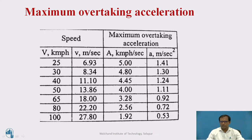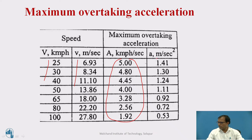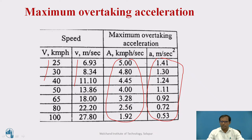For overtaking acceleration, a readymade table is provided. The table lists speed values in both KMPH and meters per second, with corresponding acceleration values. If working in meters per second, use the m/s acceleration values from the table; if working in KMPH, use the KMPH per second values. These are standard IRC values to be used directly.